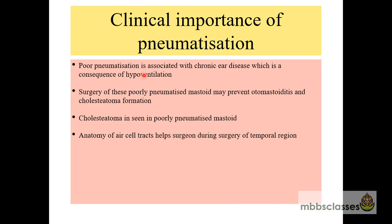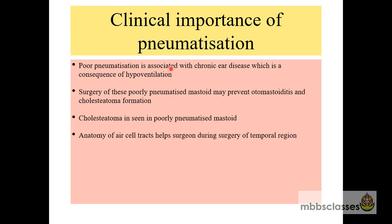What is the clinical importance of pneumatization? Poor pneumatization is associated with chronic ear disease, which is a consequence of hypoventilation. Chronic suppurative otitis media, unsafe type, is seen more in acellular or sclerotic mastoids. Surgery of these poorly pneumatized mastoids may prevent certain complications like otomastoiditis and cholesteatoma formation. Moreover, the air cell tracts help the surgeon during surgery of the temporal region.